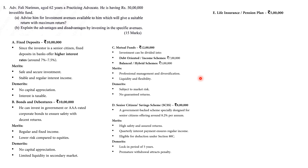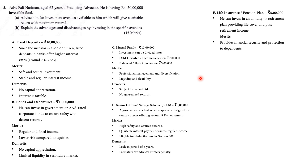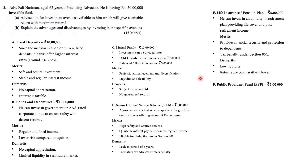Life Insurance or Pension Plan — 5 lakhs: He can invest in an annuity or retirement plan providing life cover and post-retirement income. Merits: provides financial security and protection to dependents, and tax benefit under Section 80C. Demerits: low liquidity and returns are comparatively lower.